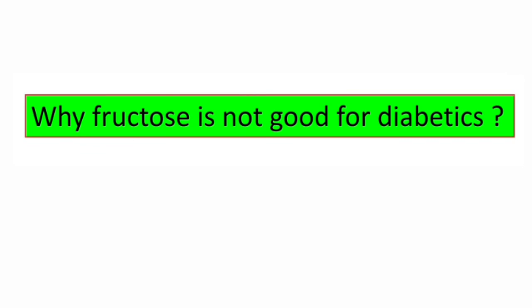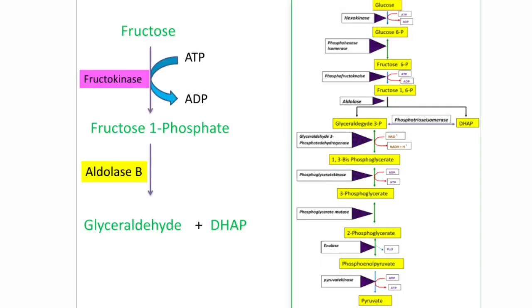Now, why is fructose not good for diabetics? Fructose forms excess amounts of fatty acids and cholesterol in diabetics. Since fructose is not under the control of insulin, it is rapidly metabolized and forms excess amounts of pyruvate and acetyl-CoA beyond the required amount for ATP formation. This acetyl-CoA is used in the synthesis of fatty acids and cholesterol, so as more acetyl-CoA is available, more fatty acids and cholesterol are synthesized.